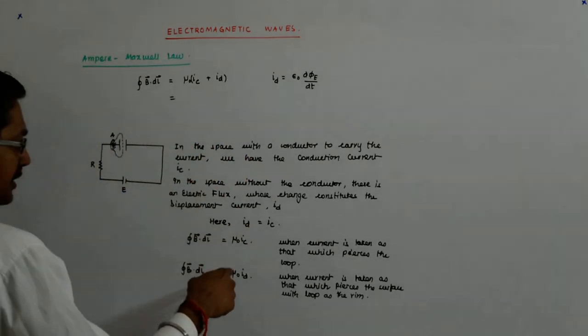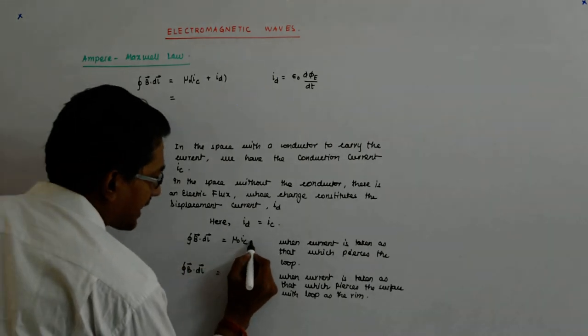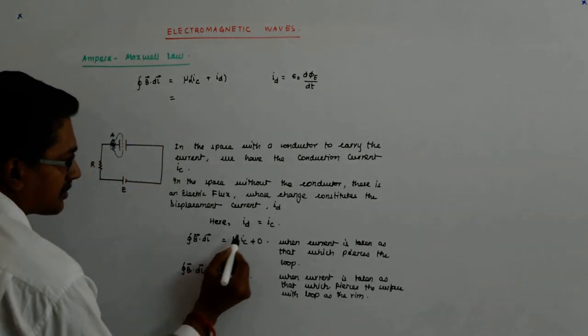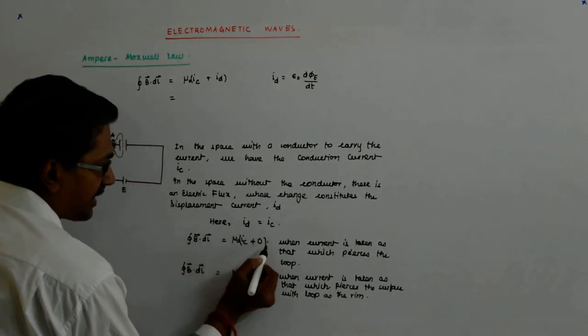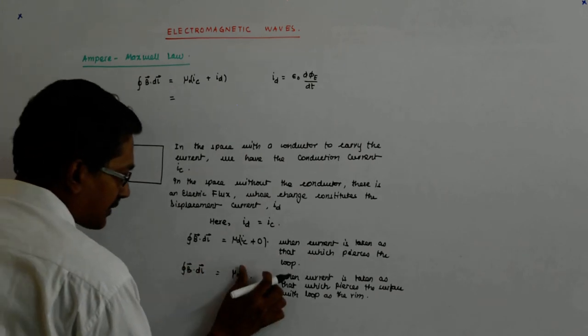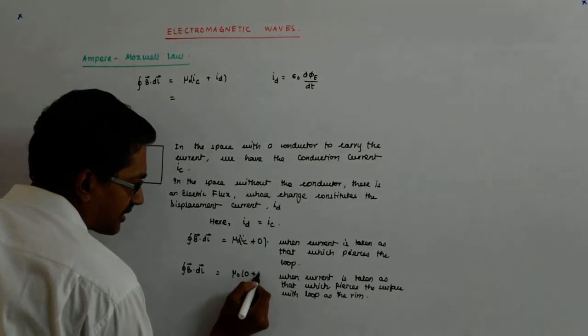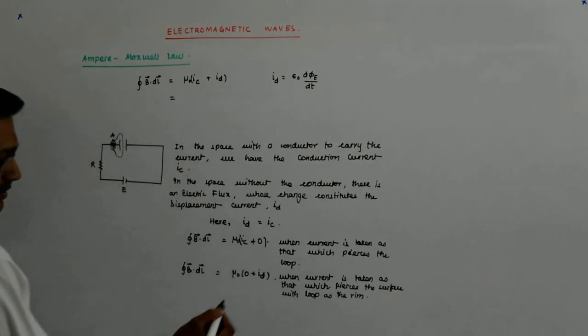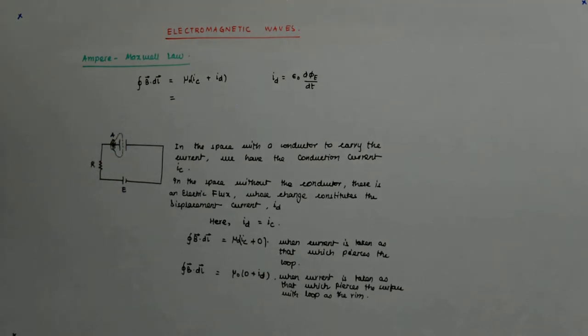So what happens? When you take one, when you take this, then it is actually kind of this: mu 0 IC plus. Wherever there is a conduction current, there is no displacement. And when there is a displacement, there is no conduction. So this is actually like this.